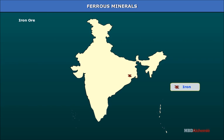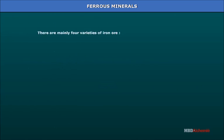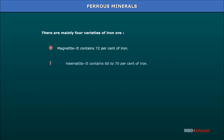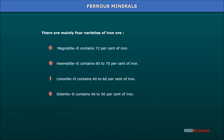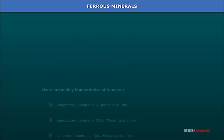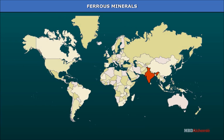Ferrous minerals — iron ore. Iron is the most useful of all metals, with strength, hardness, and magnetic properties. Iron has become the basis of modern industrialization and has revolutionized modern means of land, air, and water transport. India is rich both in quality and quantity of iron ore deposits, ranking fourth in reserves and fifth in production of iron ore. Its share in world production is 4.1%, after China, Brazil, Australia, and Russia.